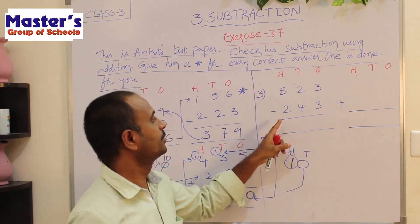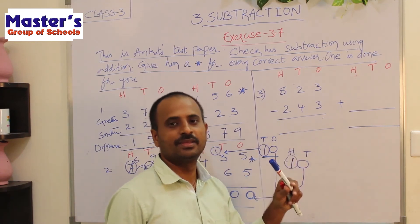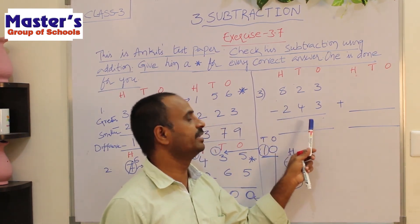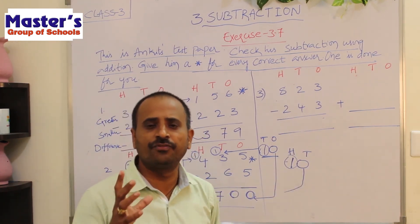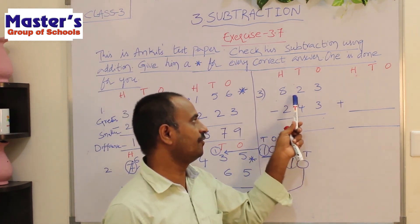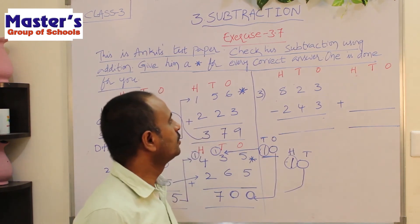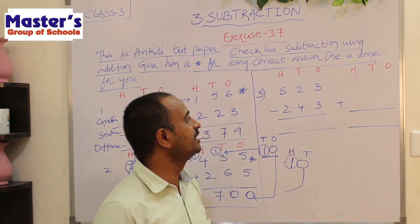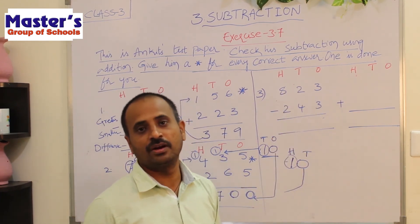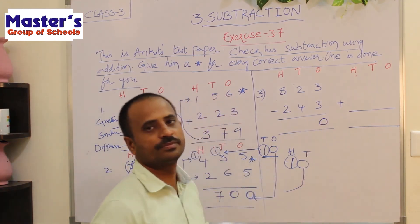Third problem: the first number is 823 and the second number is 243. We have to subtract these two numbers and verify our subtraction by addition. If we add the second number to the difference and get the first number, our subtraction is correct; if we don't get the first number, our subtraction is wrong. Start subtraction from ones place: 3 and 3 are present. Subtract 3 from 3 — the answer is 0.